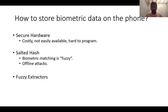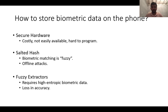Another popular option is using the notion of fuzzy extractors. But then this requires high entropy from the underlying biometric data. Fuzzy extractors also result in a loss in accuracy of biometric matching. And once again, the offline dictionary attacks are still possible here.